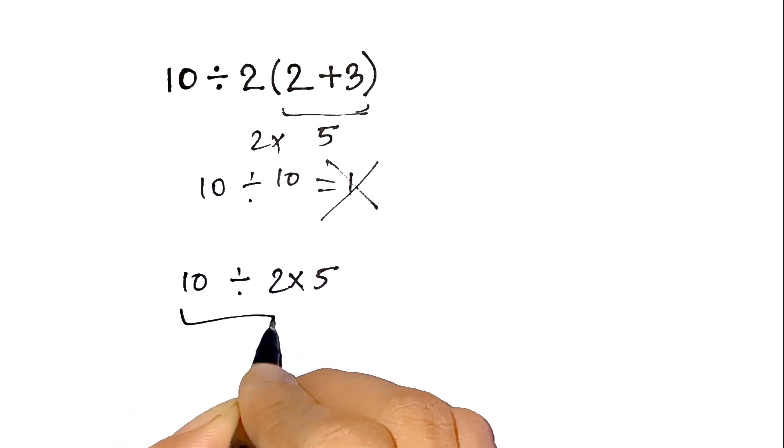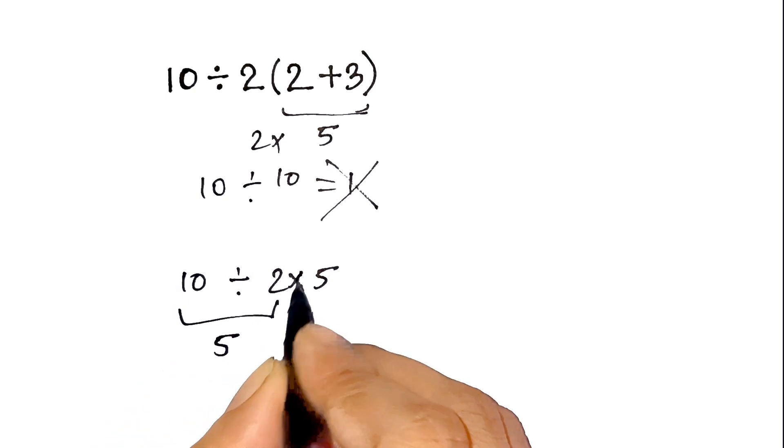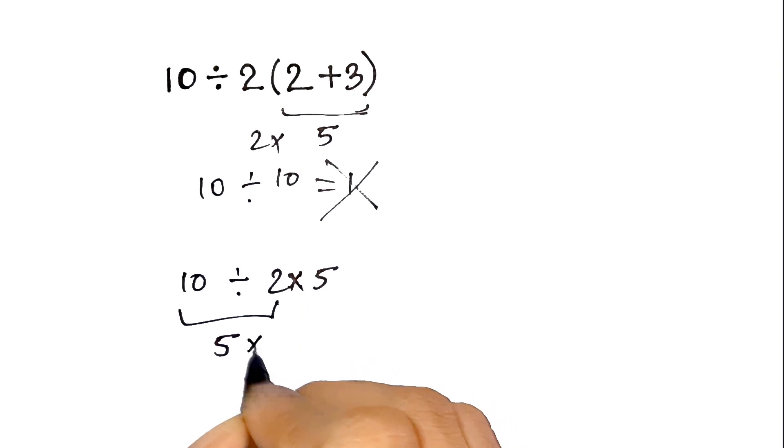First, 10 divided by 2 equals 5. Then, 5 times 5 equals 25.